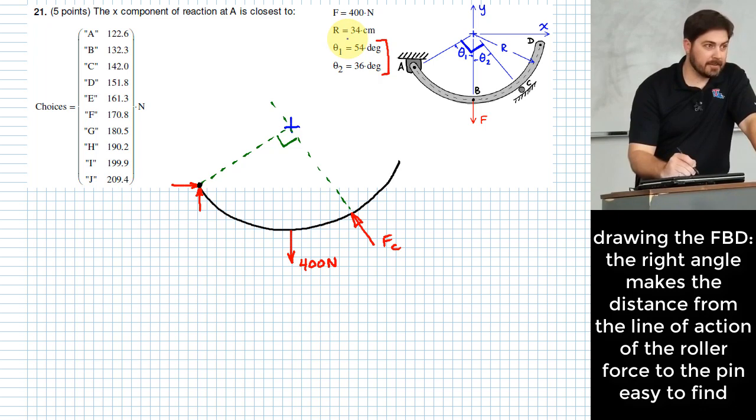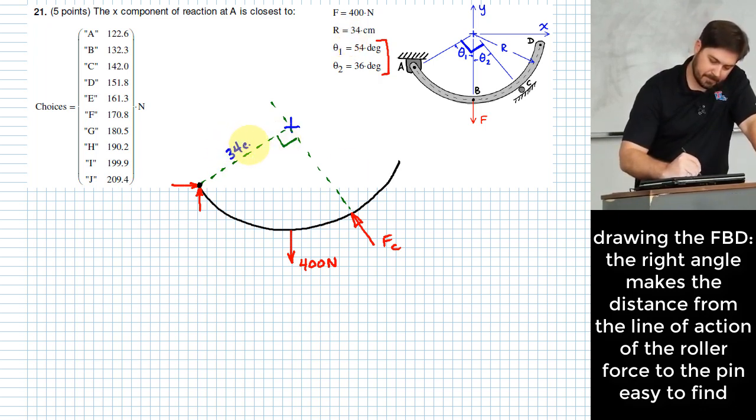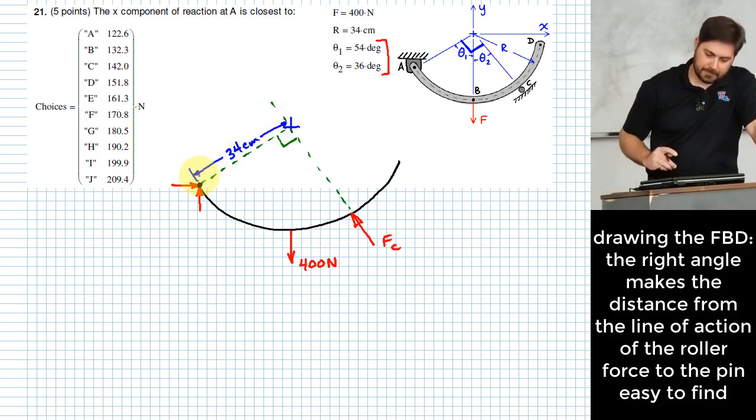R, right? It's just the radius. So 34 centimeters. Okay. So that makes F C relatively easy to deal with.